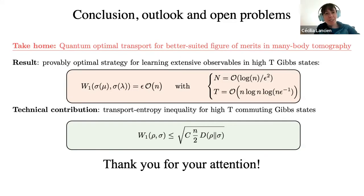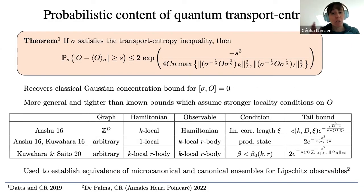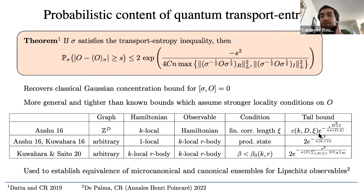Thanks to Cambyse for this very clear talk. I don't see questions in the chat, so I'll ask one myself. You mentioned that the transport entropy approach is more general and covers more cases than previously known results — in the cases covered by both, is the dependence on locality or the number of bodies the same, better, or worse? Yes, great question. For example, comparing with the Kuwahara–Saito result, they have to replace the Lipschitz constant by something that scales very badly with the size of the regions where the O_i are defined, so our approach gives a better dependence on those local observables — they do get a bound scaling as s², but the denominator is worse.